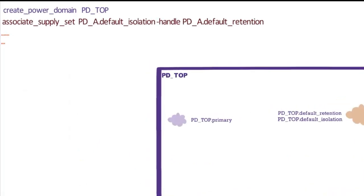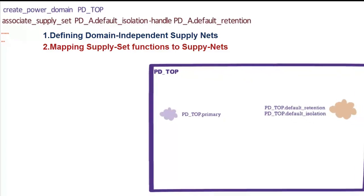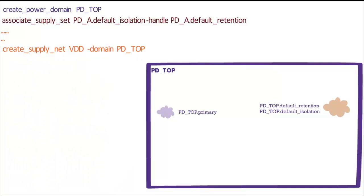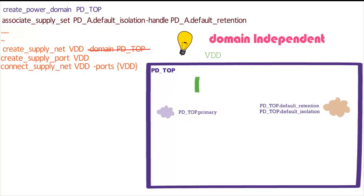Before physical implementation, we have to refine the UPF, which consists of two steps: defining domain-independent supply nets, and mapping supply set functions to these supply nets. Let's define the supply nets first. We create the supply net vdd — note the supply net has to be domain-independent. Then we create the supply port vdd and connect the supply net vdd to supply port vdd.